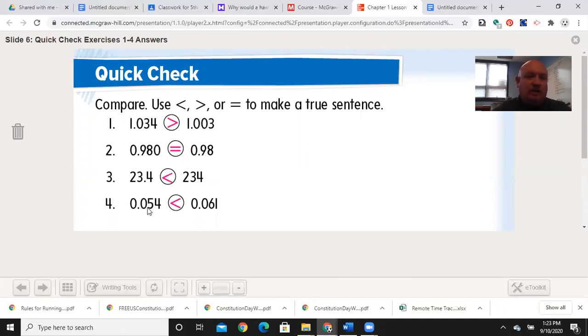Over here, 0 is the same. The next 0 is the same. 5 is less than 6, so it's going to be less than.